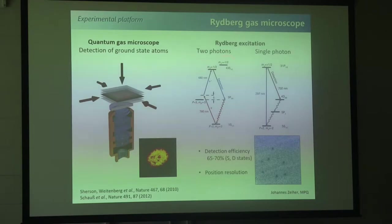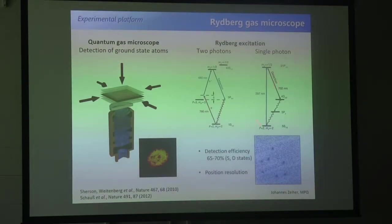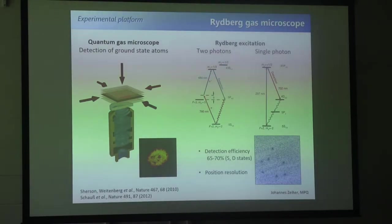We have two ways to excite Rydberg atoms. We have the conventional two-photon excitation scheme with 780 and 480 nanometer lasers, which covers the S states. More recently, and this is the main focus of the talk, we've been implementing direct single-photon excitation to a P state, for which you sum these two wavelengths to get 297 nanometers. This is less convenient than the two-photon transition, but on the positive side you get much higher couplings, which is very important for the dressing.